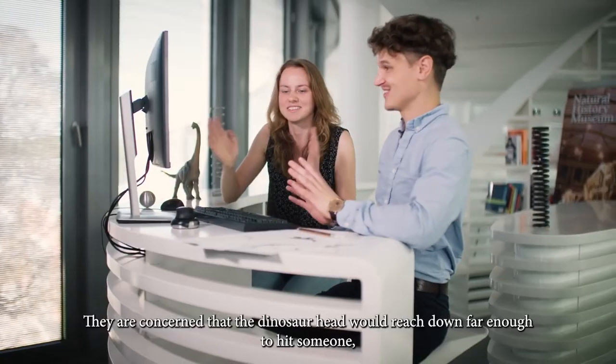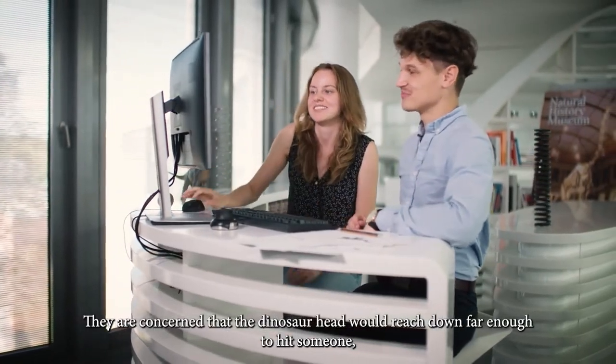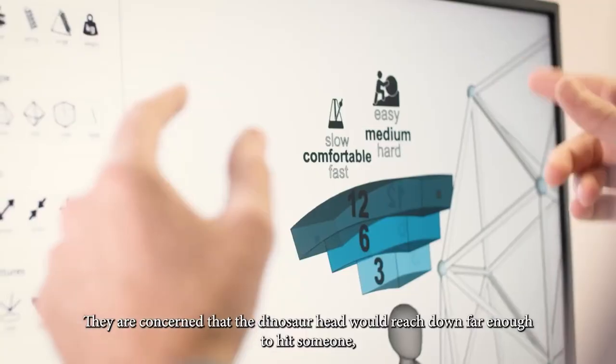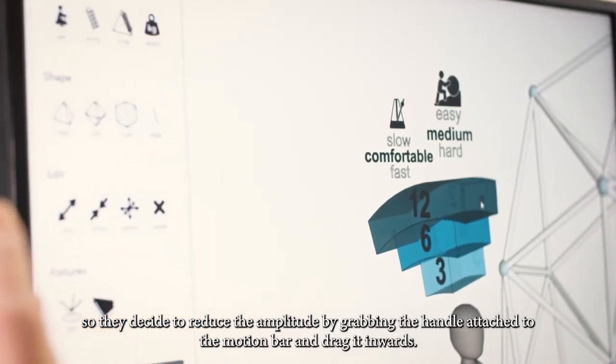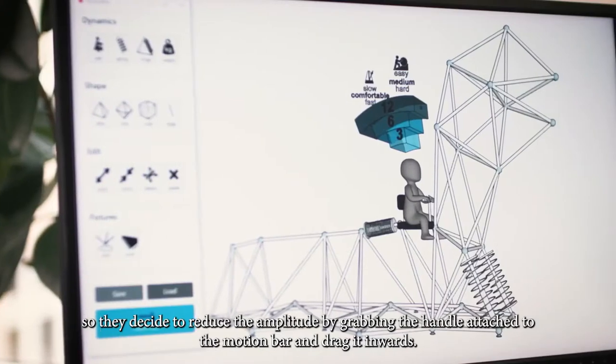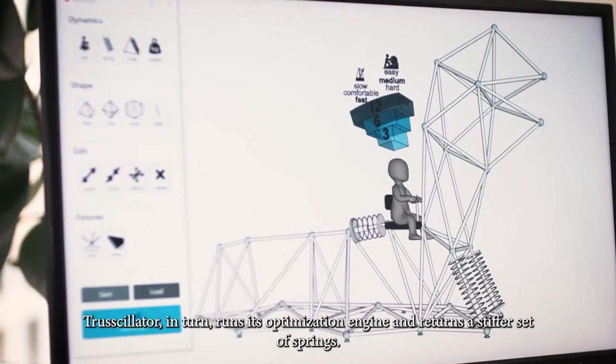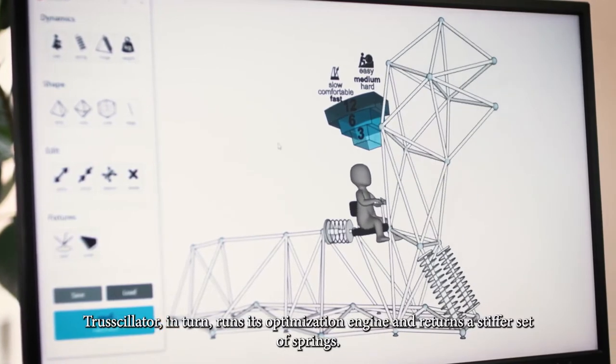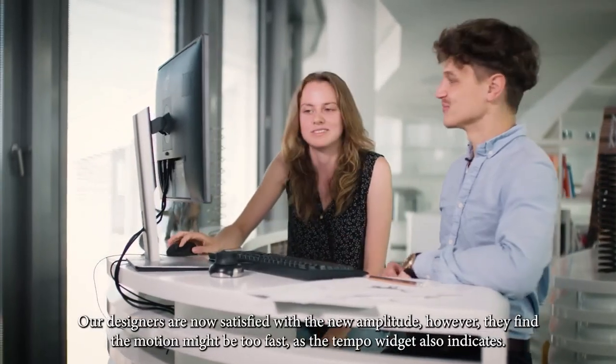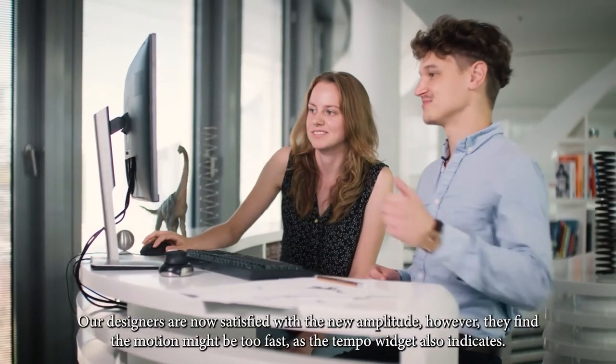They are concerned that the dinosaur's head would reach down far enough to hit someone, so they decide to reduce the amplitude by grabbing the handle attached to this motion bar and drag it inwards. Trussillator in turn runs its optimization engine and returns a stiffer set of springs. Our designers are now satisfied with the new amplitude.